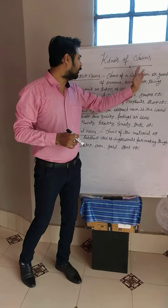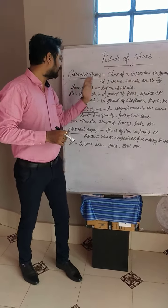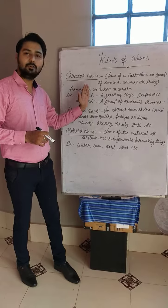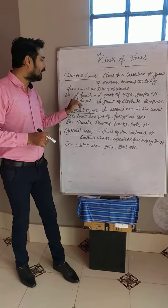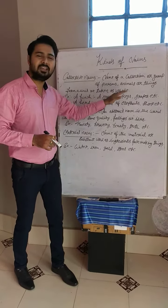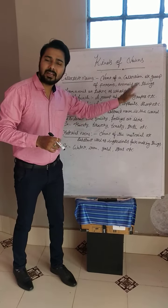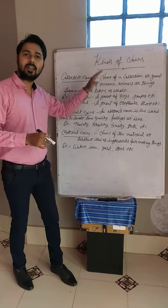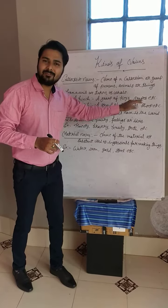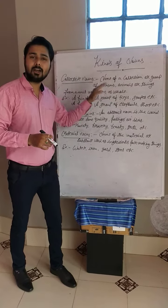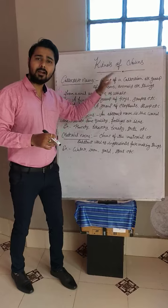Name of a collection or group of persons, animals or things that form a unit or are taken as a whole. For example, a bunch — a group of keys is called a bunch, a group of grapes is called a bunch. A herd — a group of elephants is called a herd, a group of ships is called a herd.